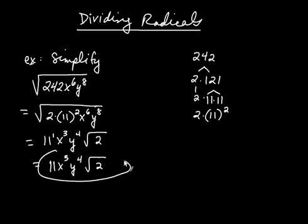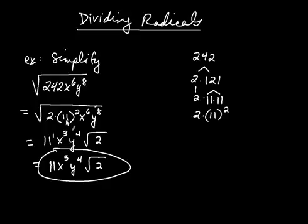The point of this example was to illustrate that sometimes it's helpful to write the prime factorization of a large number with factors raised to exponents. We're going to use that technique for dividing radicals. Let's go ahead and do that now.